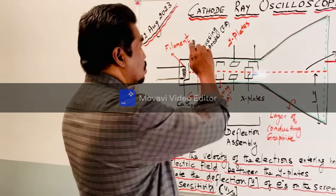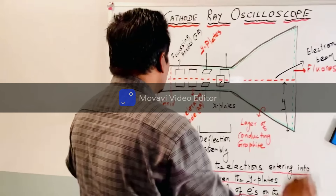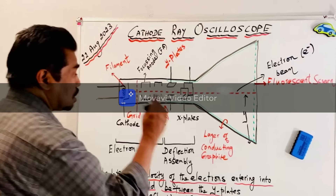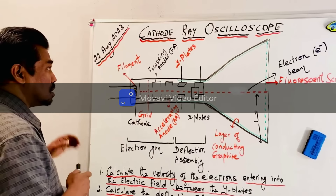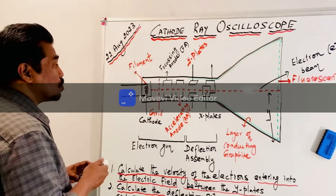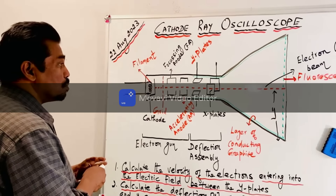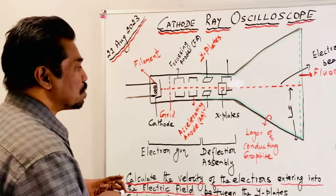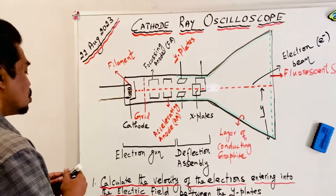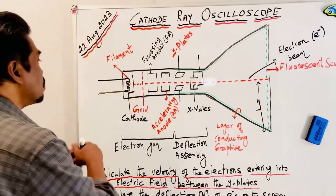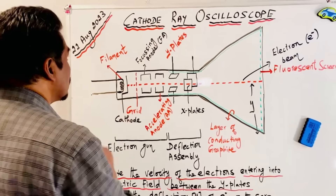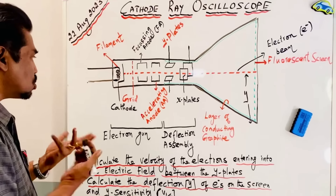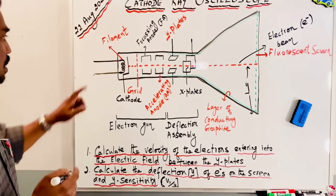Today we are going to study about the cathode ray oscilloscope, in short called a CRO. It is an important device in physics to study waveforms. There are some components available in the CRO, and now we are going to study about those components.